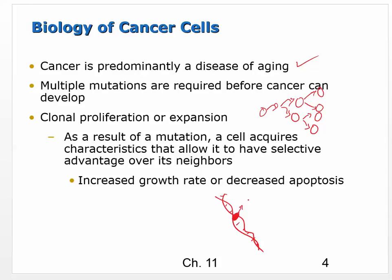As a result of a gene mutation, a cell acquires characteristics that allow it to have a selective advantage over its neighbors. When a cell is dividing and pushing all the other cells out of the way and taking up resources, that causes tissue death in the area. It's caused by either an increased growth rate, or the old cells aren't dying — decreased apoptosis — or both.